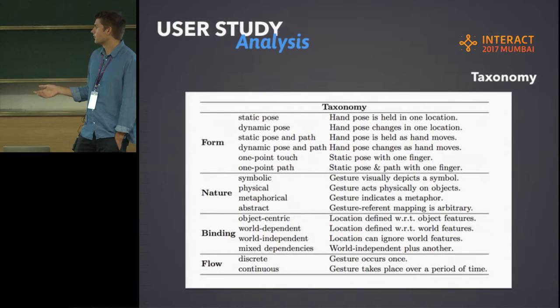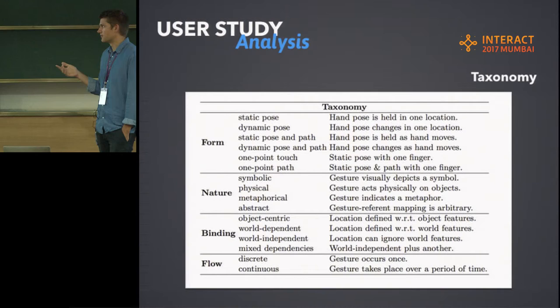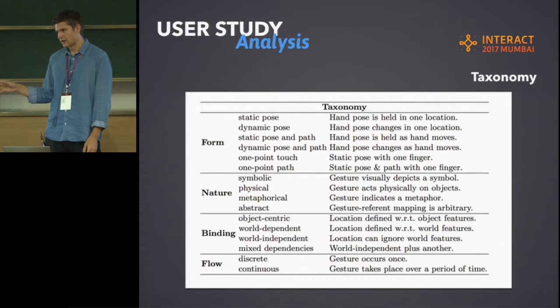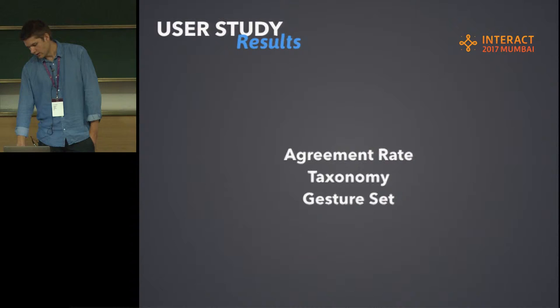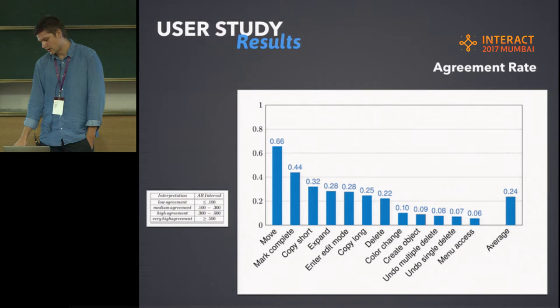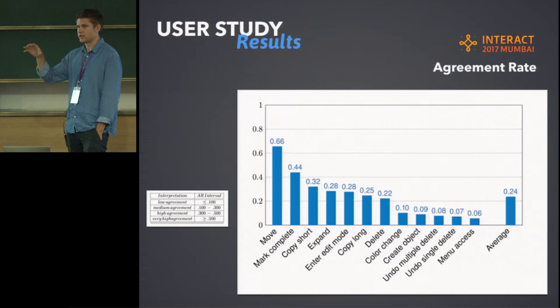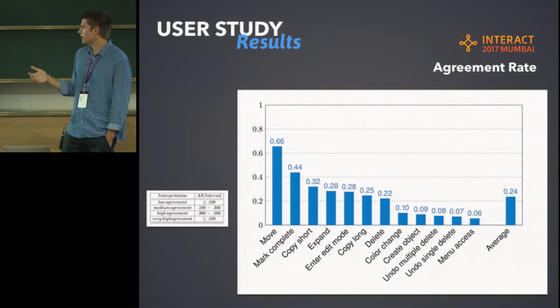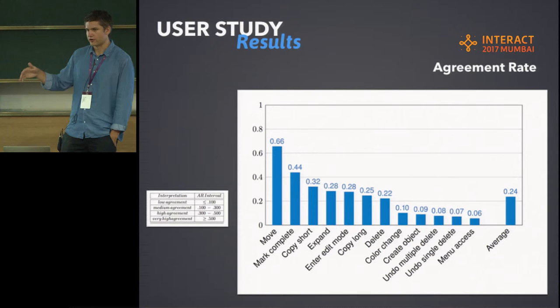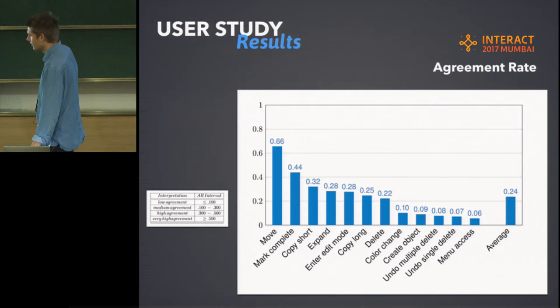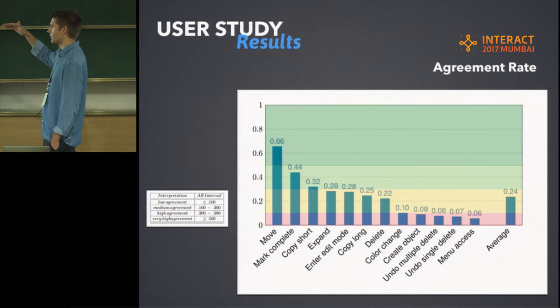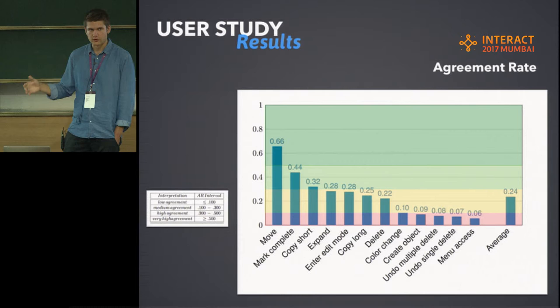The taxonomy is based on previous elicitation study work, grouping categories of gestures in different ways — such as how you move your hand, whether the action is continuous or just a tap. Looking at the results, the move action had the highest agreement rate, meaning people most consistently did the same gesture. Moving down the list, actions became harder to agree on. Undo and opening a menu had very low agreement — people did a lot of different gestures for those.